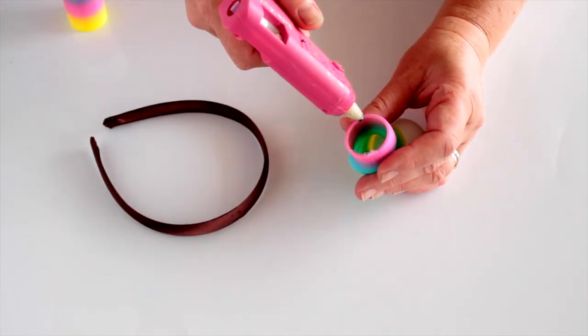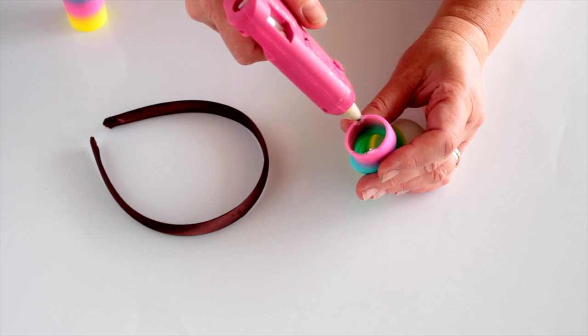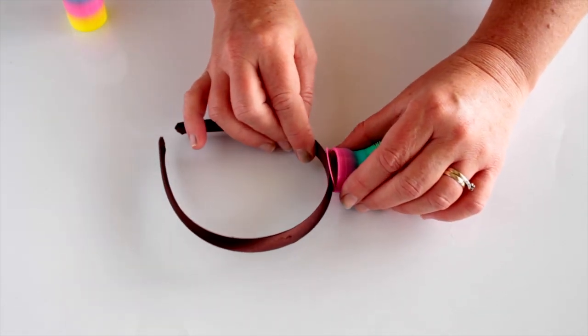With the other end of the slinky, glue around the edge and quickly stick that to the headband. And do the same for the other eyeball.